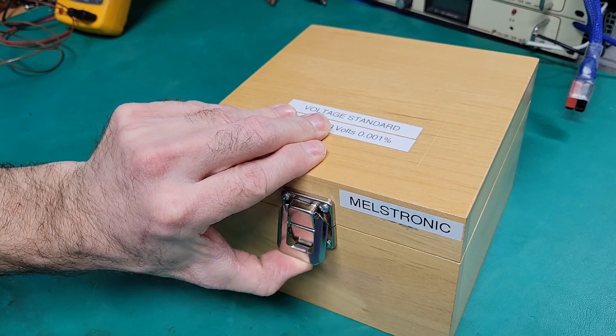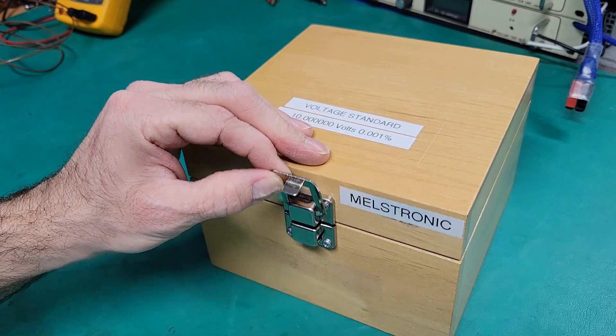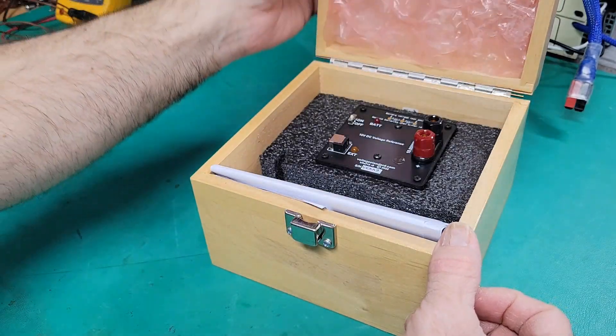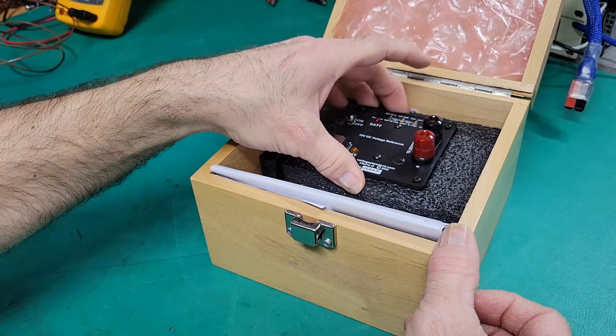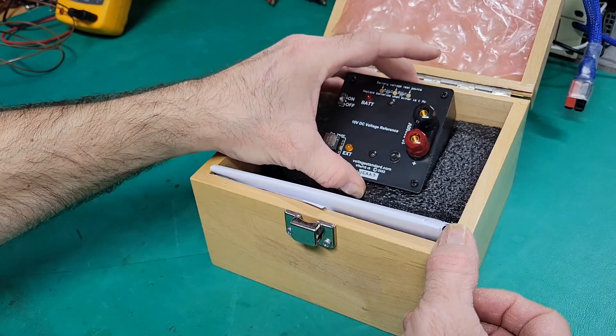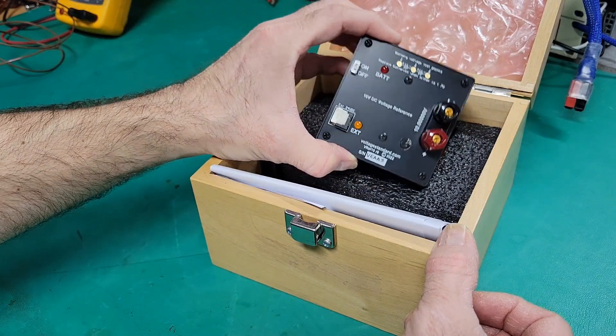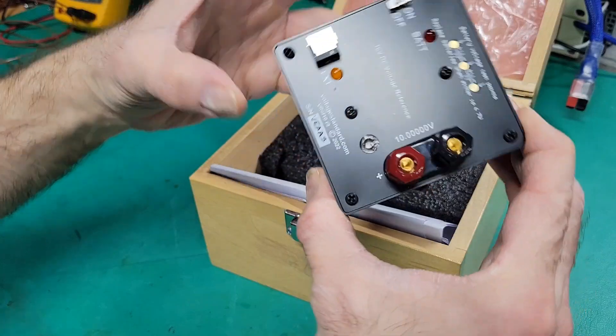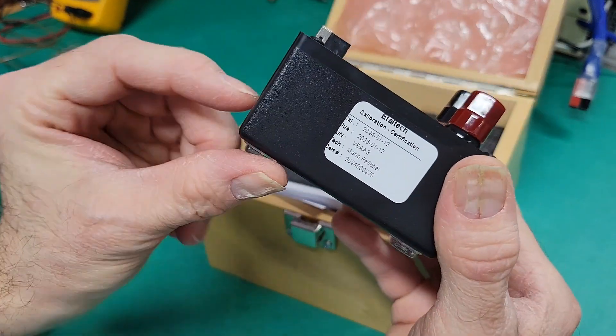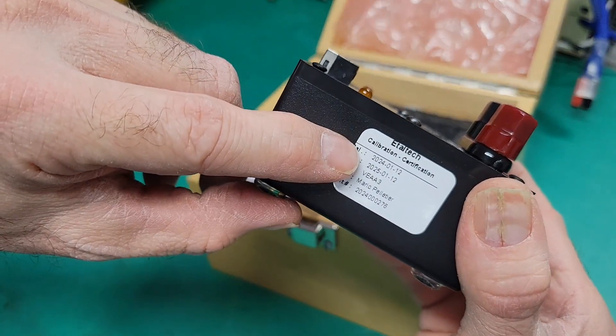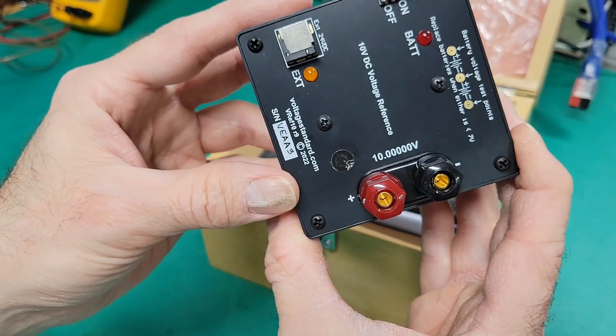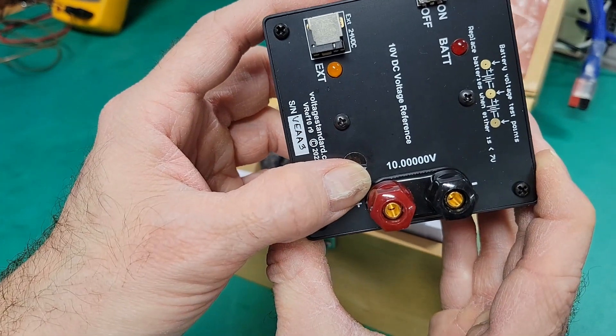In order to do that I first use a voltage standard which I will use to check the voltage calibration of my instrument. So in this case this one is calibrated with the certificate of calibration here, a calibrated 10 volt precision reference.